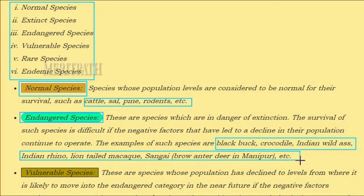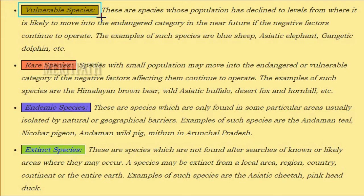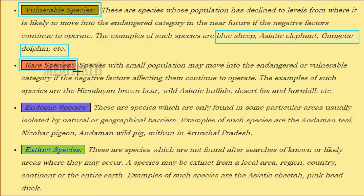Vulnerable species are those whose population has declined to levels from which they are likely to move into the endangered category in the near future if negative factors continue to operate. Examples include the blue sheep, Asiatic elephant, and Gangetic dolphin.